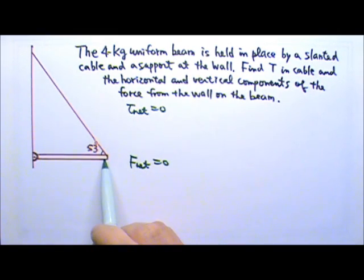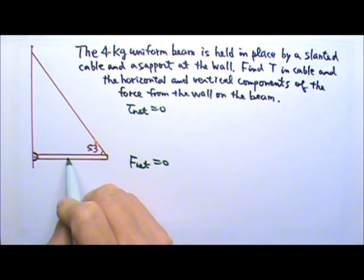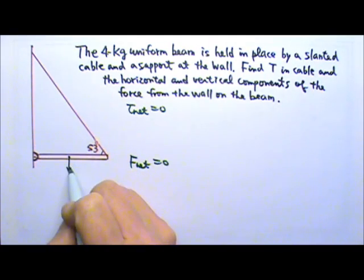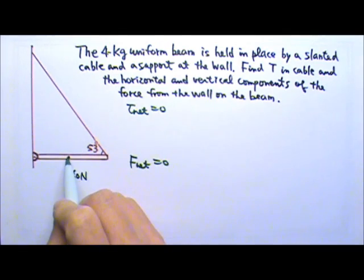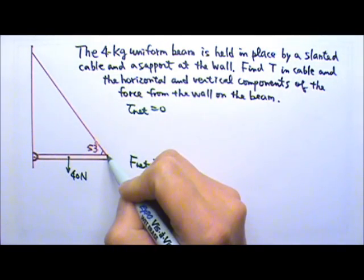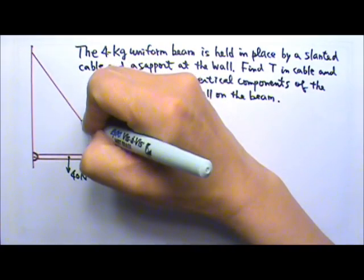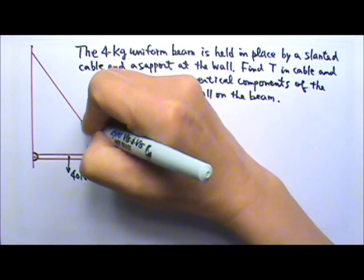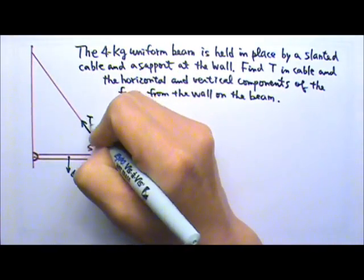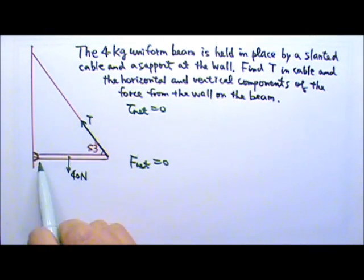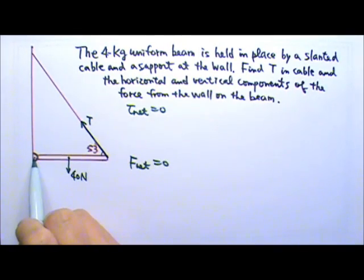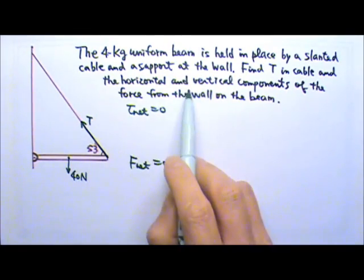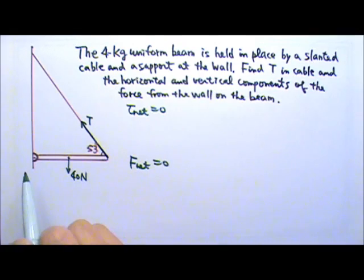The 4 kg uniform beam has an Mg of 40 N acting at the center of mass, right in the middle of the beam. The beam is touching the rope here, so there is a tension. The beam is also touching this contact from the wall, which provides a horizontal and vertical component of the force.